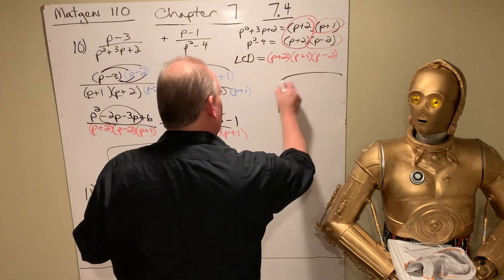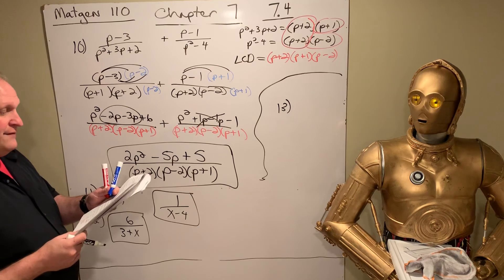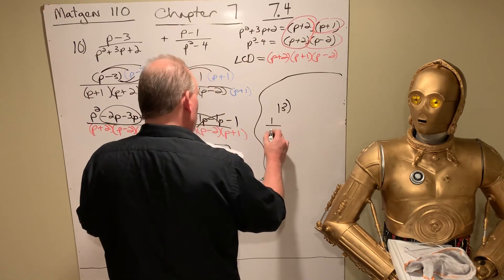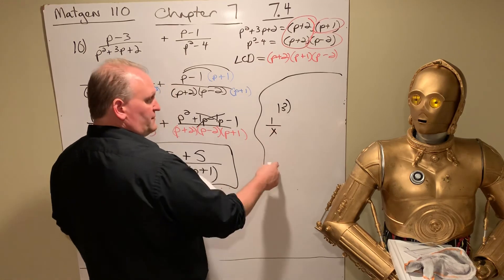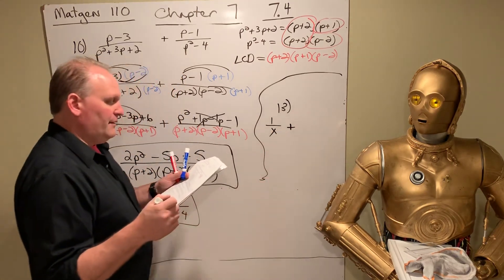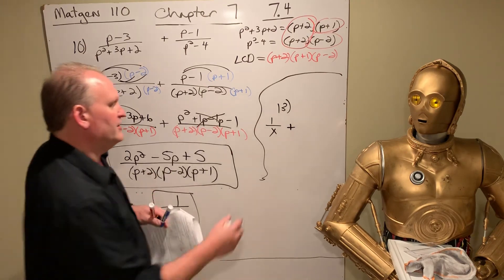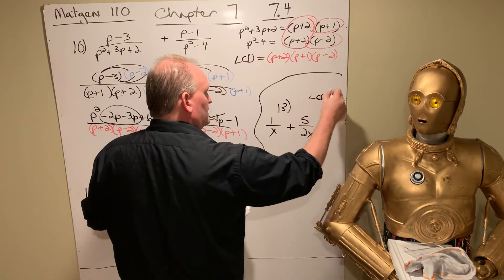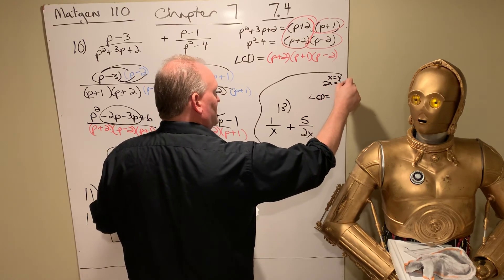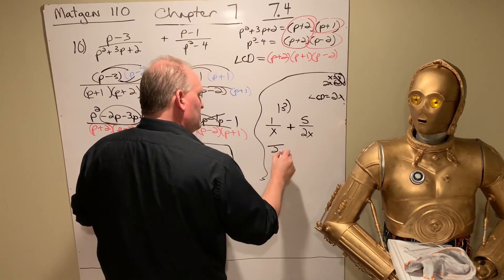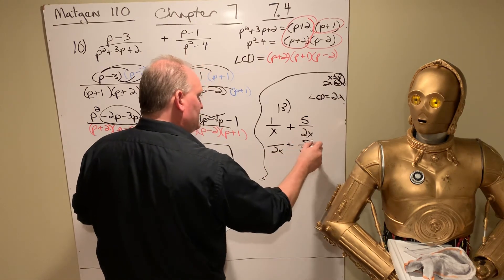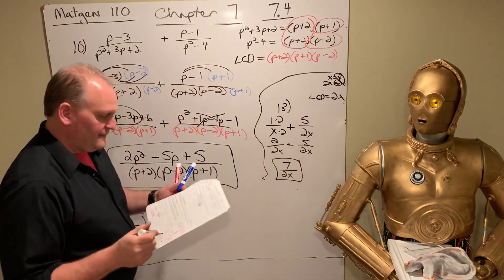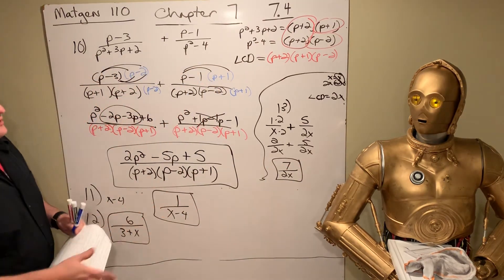And then 13. That is the sum of the reciprocal of a number and the quotient of 5 and twice the number. So we have 1 over x. The sum of the reciprocal of a number. This is the reciprocal of the number. 1 over x. Sum means add. And the quotient of 5 and twice the number. That's 5 over 2x. So our LCD there would be, let's see. We got x is just x. 2x is 2 times x. So they both have x. And then 2 is a leftover. So it's 2x. So I need 2x on the bottom. That one already has a 2x. That one needs to multiply by 2. And so we end up with 7 over 2x. And that's it. That is the notes for 7.4.